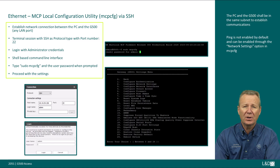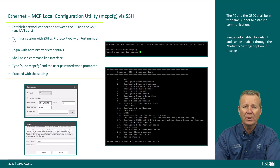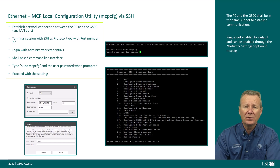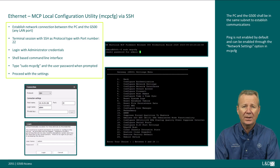The MCP Gateway local configuration utility can be launched remotely via SSH. The PC and the G500 shall be in the same subnet to establish a network connection. Launch a terminal application such as Secure Terminal Emulator from the DS Agile folder in the Start menu. Start a terminal session with SSH as the protocol type with port number 22. Log in using administrative credentials, then type sudo MCPCFG and enter the user password when prompted. A gateway settings menu will be shown and you can proceed with the settings.